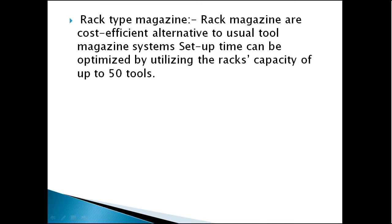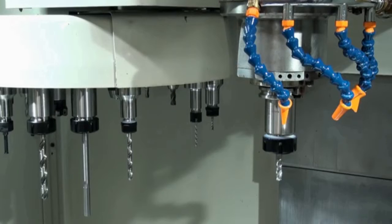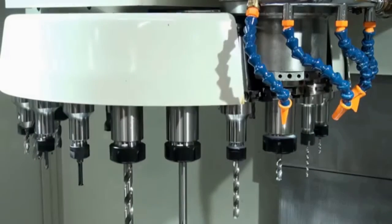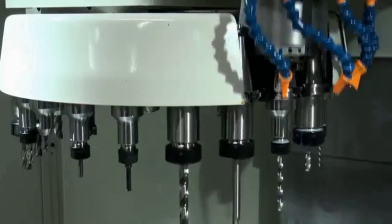Now let's try to understand the Carousel, or Umbrella Type Tool Magazine, and the Chain Type Tool Magazine through some videos. I will quickly explain how the Carousel Tool Changer works and then explain every stage of the Tool Changer.